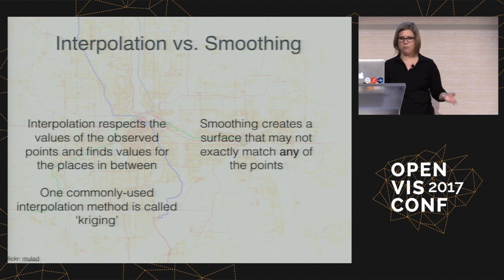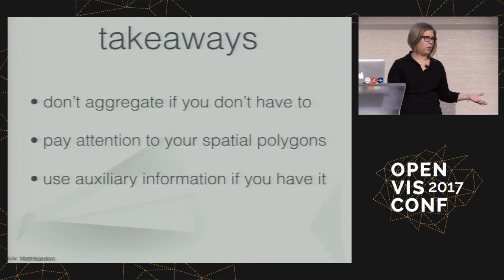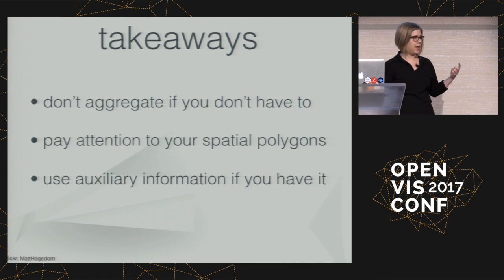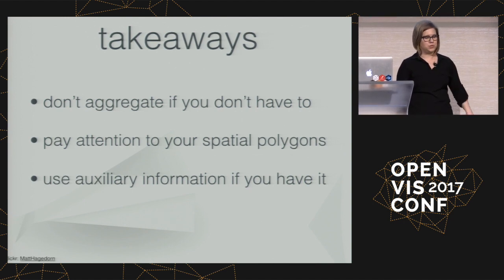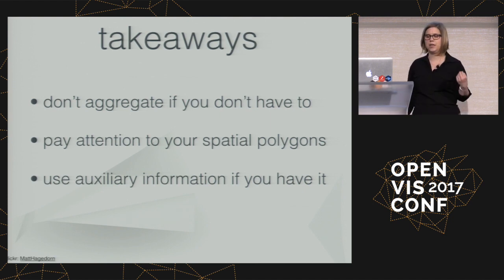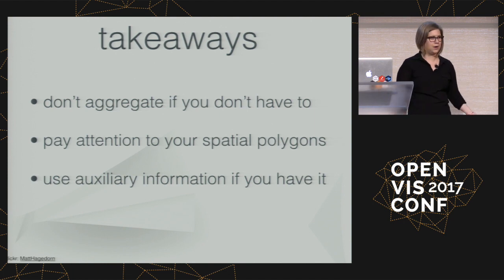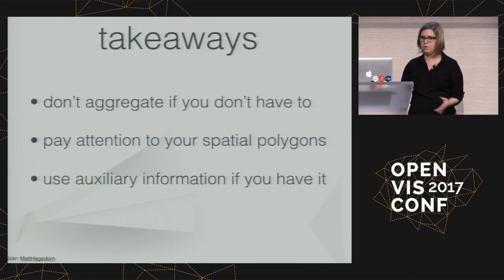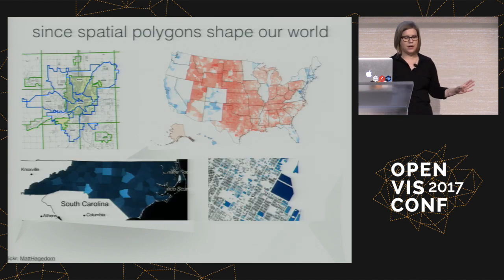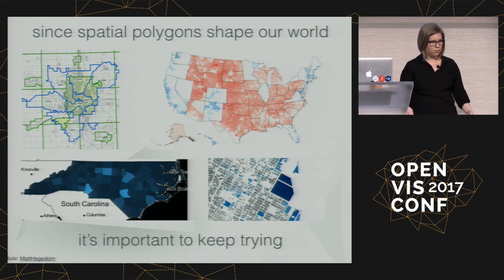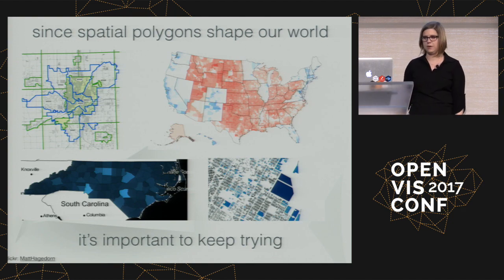My main takeaways: if you don't have to aggregate data to polygons, don't. If you are going to aggregate, pay attention to the spatial polygons you're using — don't use zip codes or something else that's meaningless. And if you have auxiliary information about where housing is located or where rivers and lakes are, use that information to help when moving between levels of spatial support. Because spatial polygons impact us on a day-to-day basis, it's really important that we keep working on these methods and being cognizant of the ways they can impact the visualizations we make.